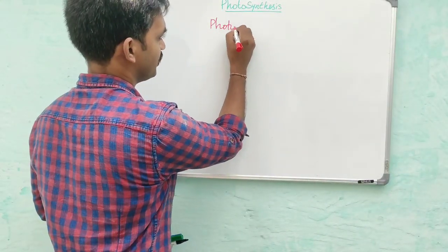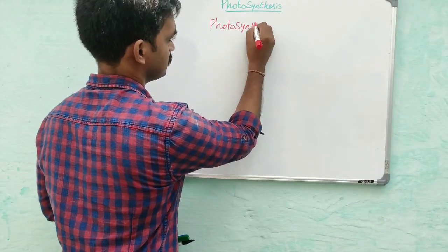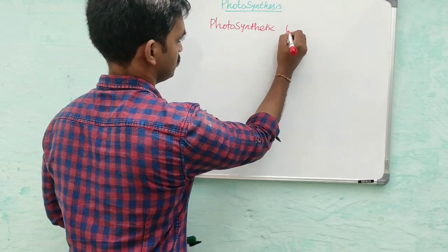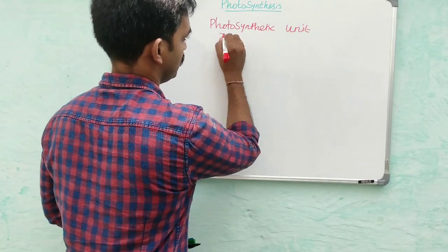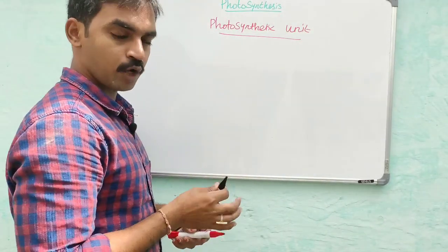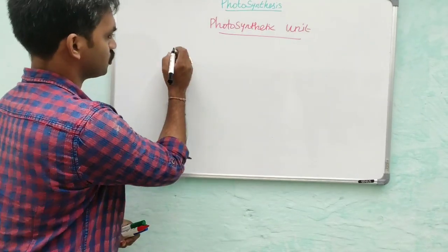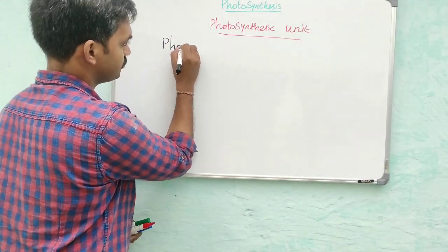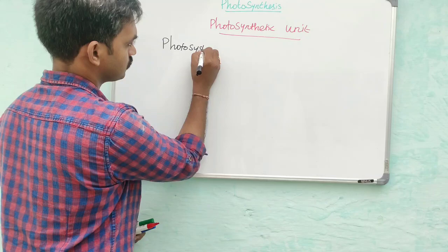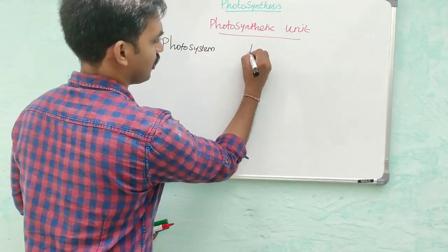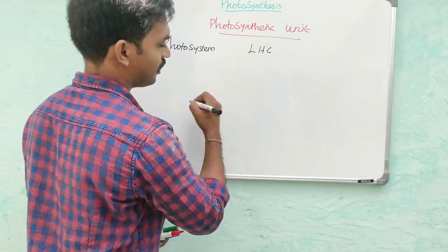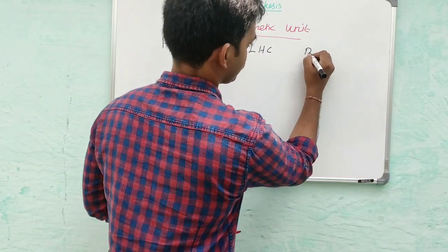The photosynthetic unit consists of three main terms: photosystem, light harvesting center, and reaction center.